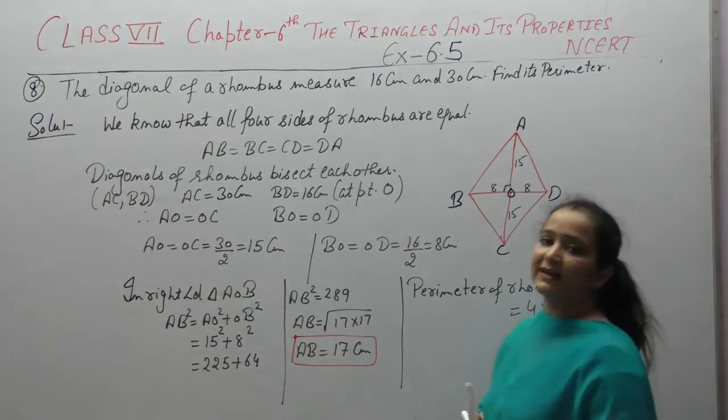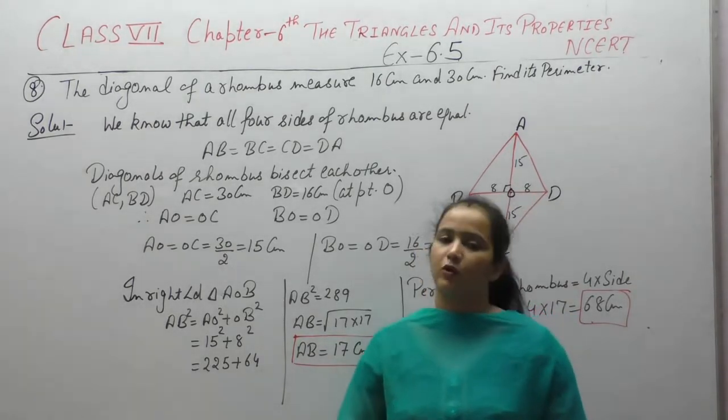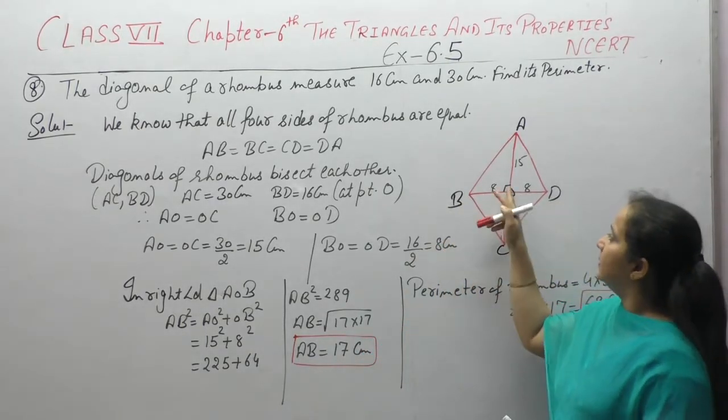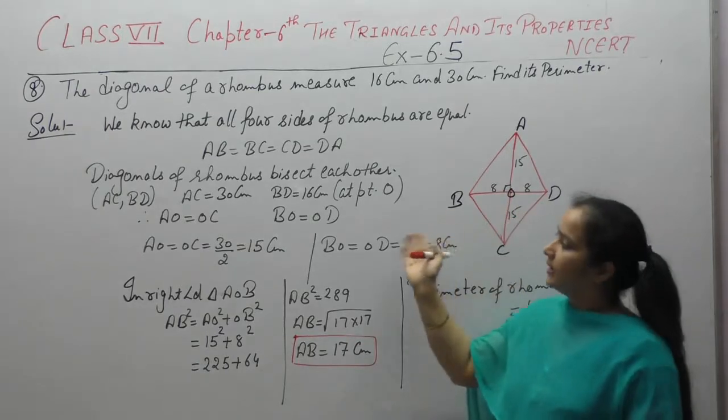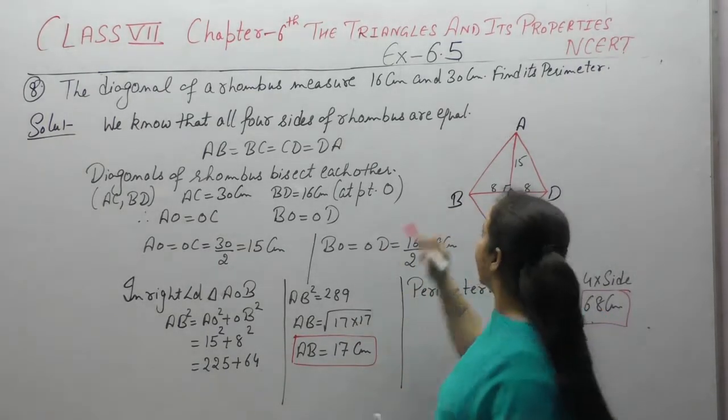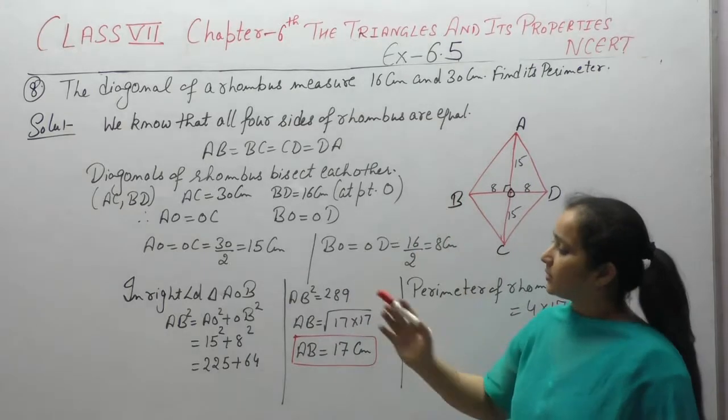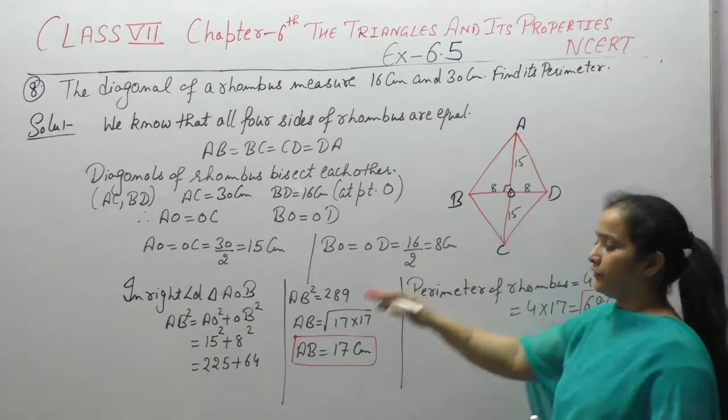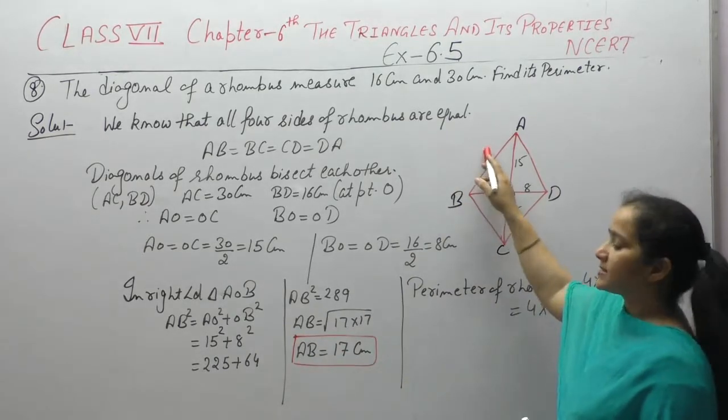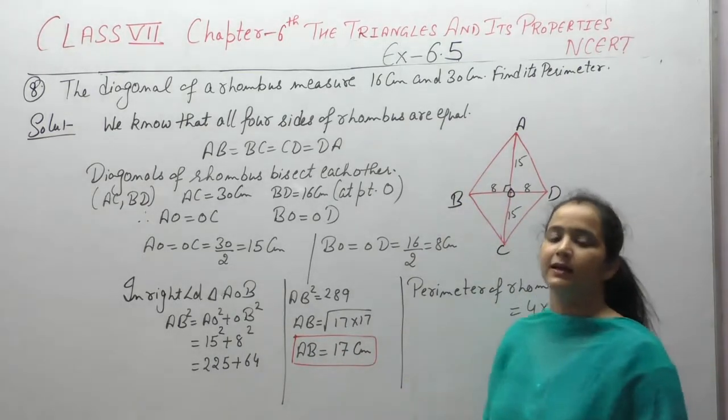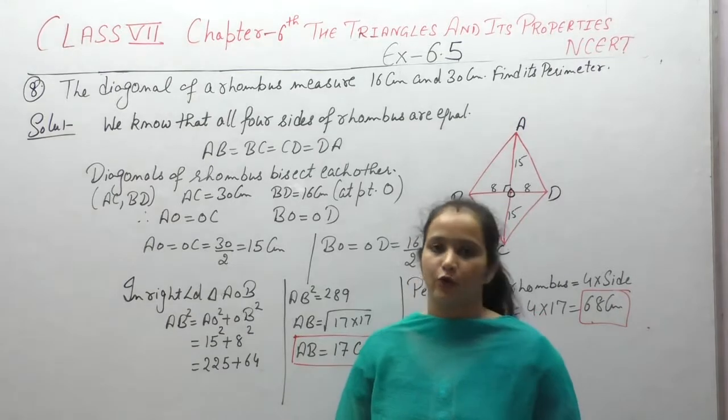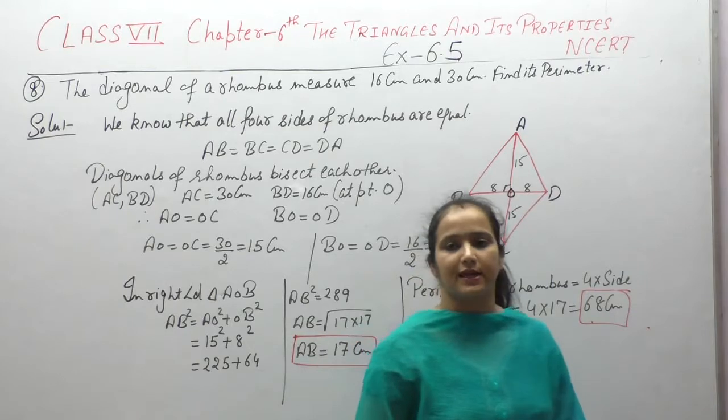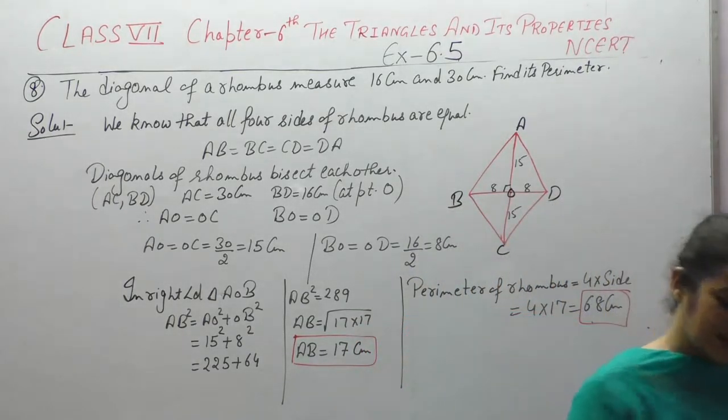Clear? We know that all sides of rhombus are equal and diagonals bisect each other at 90 degrees. So diagonals bisect, angle is 90 degrees, triangle AOB is a right angle triangle. Pythagorean theorem applied: longest side square equals sum of squares of other two sides. From here we got AB value is 17. Perimeter of rhombus will be 4 into side because 4 sides are equal. So 4 into 17, 68 centimeters. Note it down.